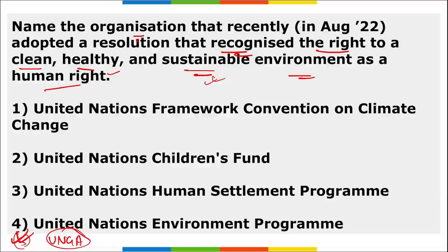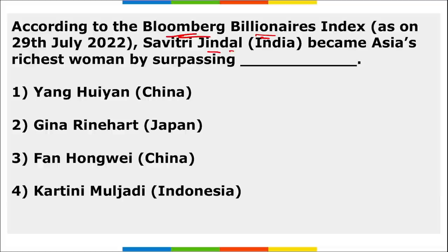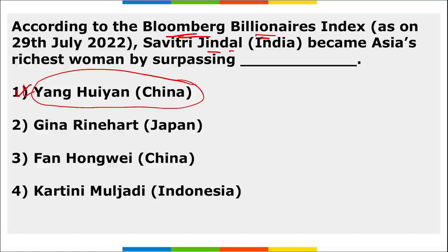According to Bloomberg's Billionaires Index, Savitri Jindal of India became Asia's richest woman by surpassing Yang Huiyan of China as of July 29th, 2022. Yang Huiyan was surpassed due to the property crisis in China, having lost around $1 billion in just one day. Savitri Jindal has a fortune of $11.3 billion through the Jindal Group and is the 10th richest person in India.